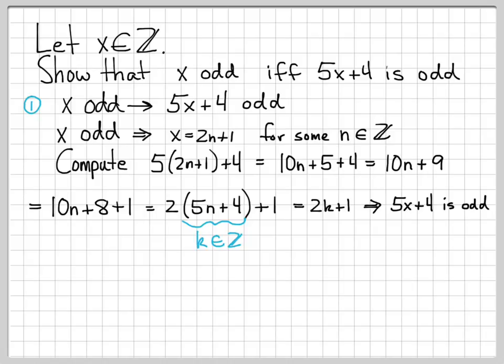That's half of the proof. We've done x odd implies 5x plus 4 odd. To finish the if-and-only-if proof, we have to do the other direction as well.